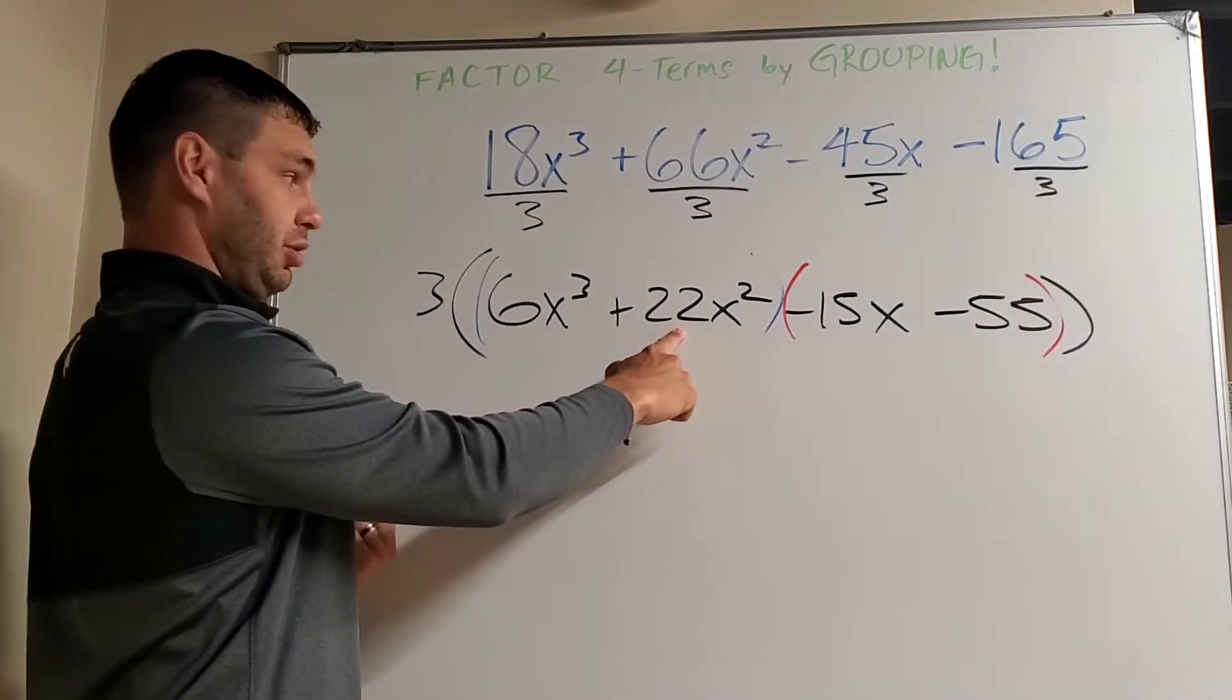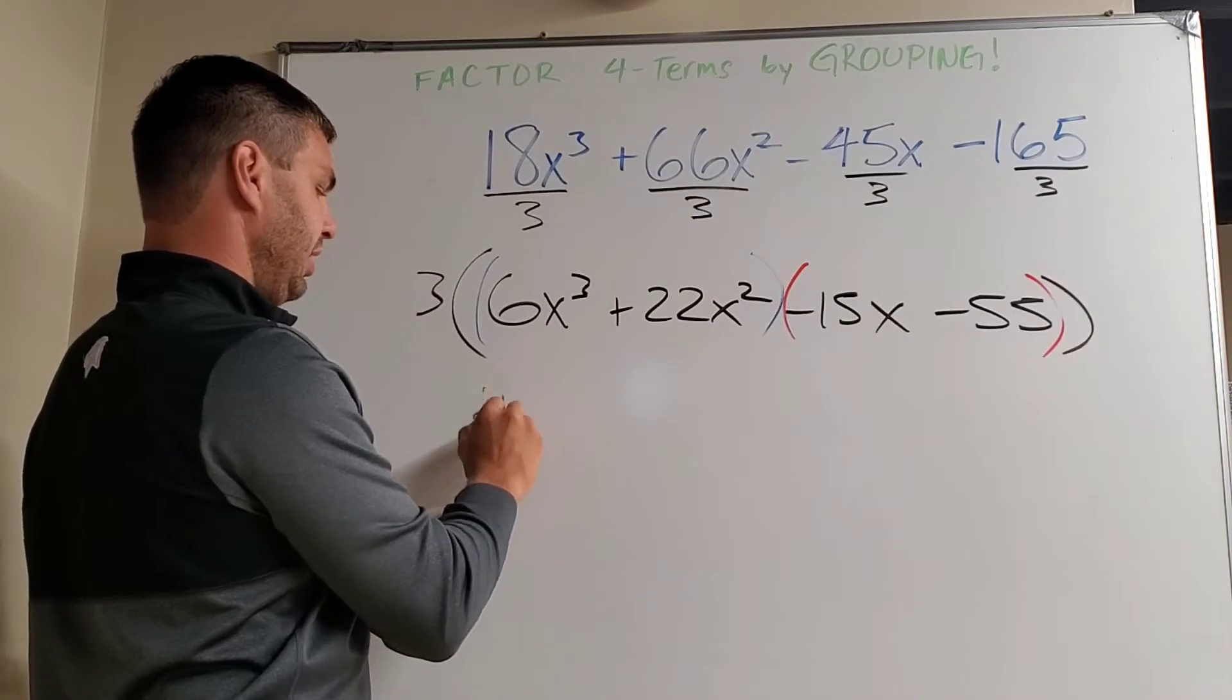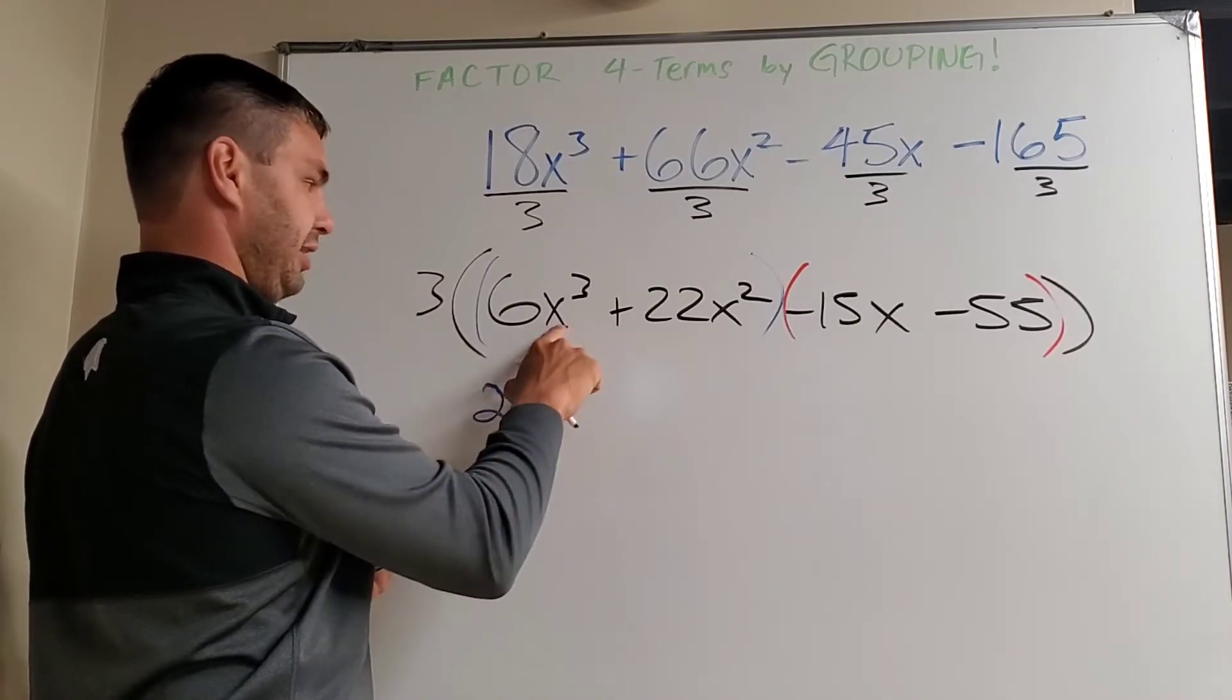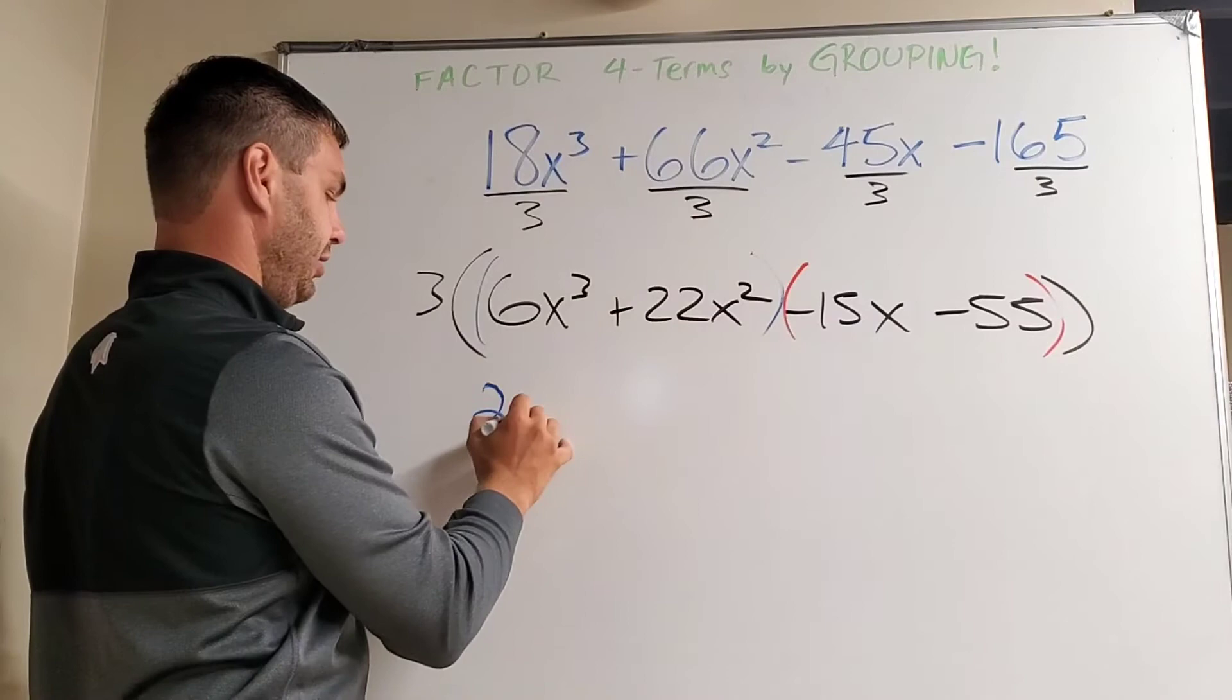Then I also notice that this one has 3x's, this one has 2x's. I'm going to take out x squared, 2x's.